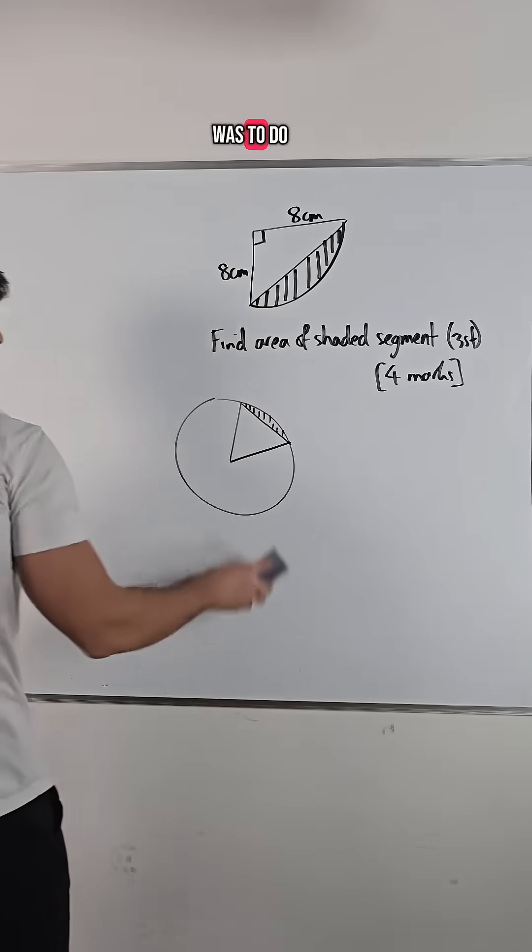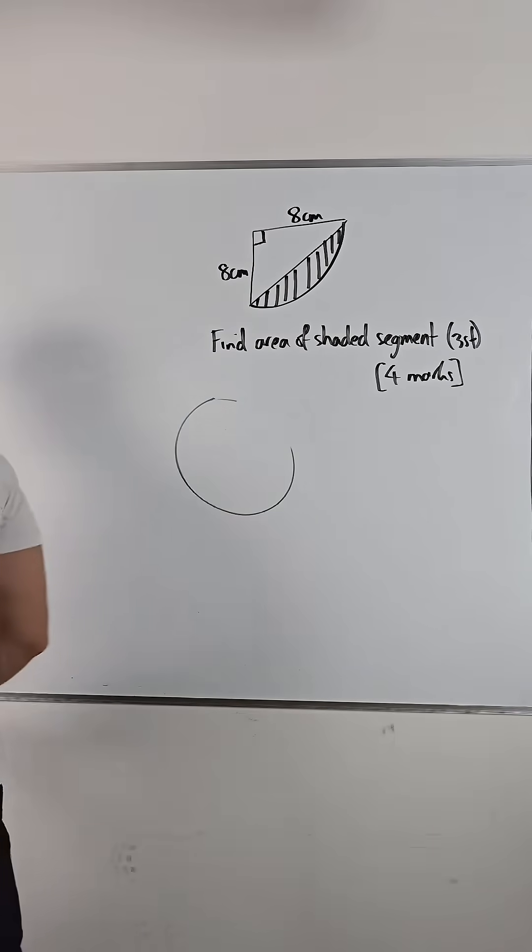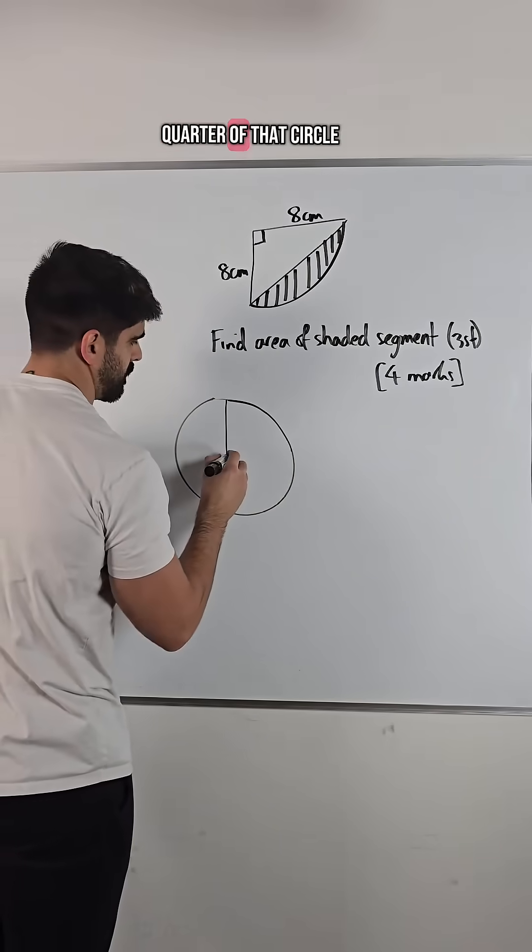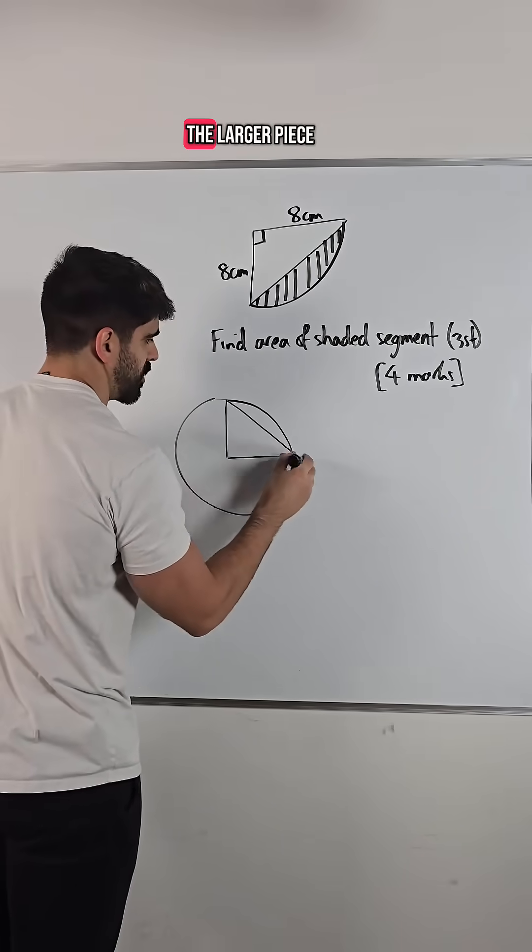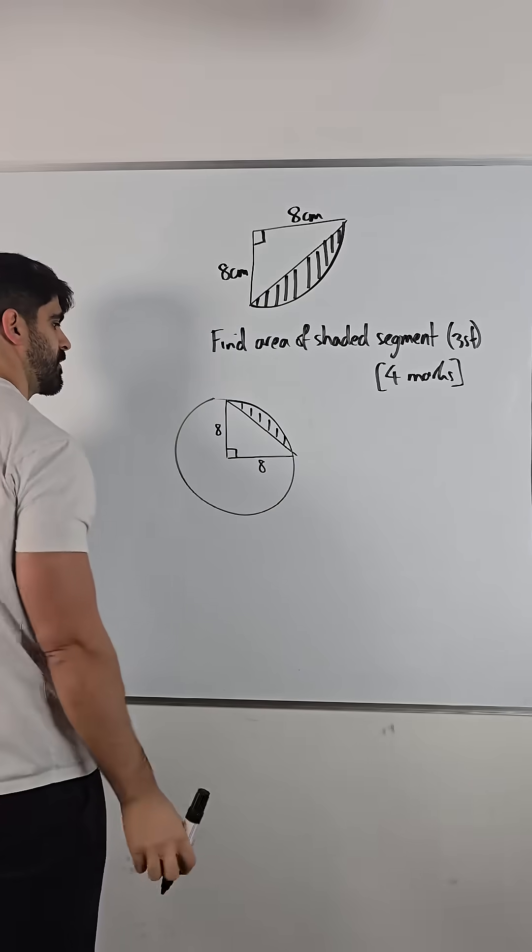So if I was to do it in the context of this circle here, it is going to be a quarter of that circle. This is basically the larger piece of what they're on about. So we have eight and eight.